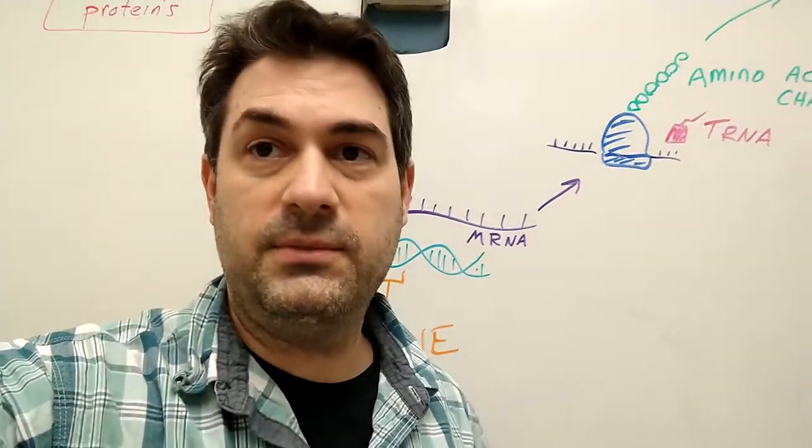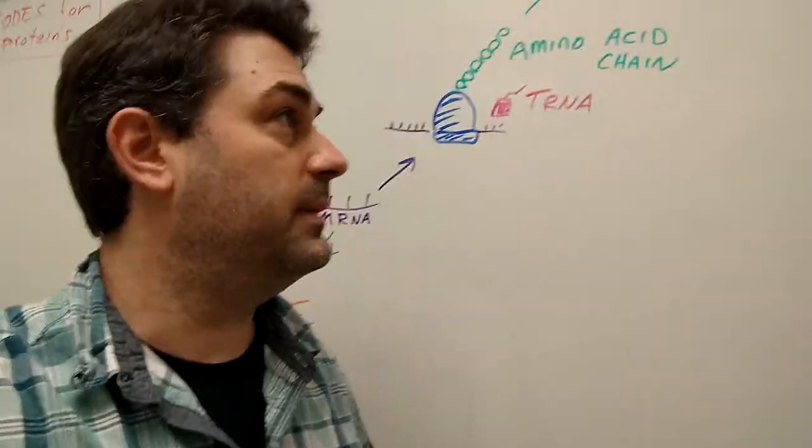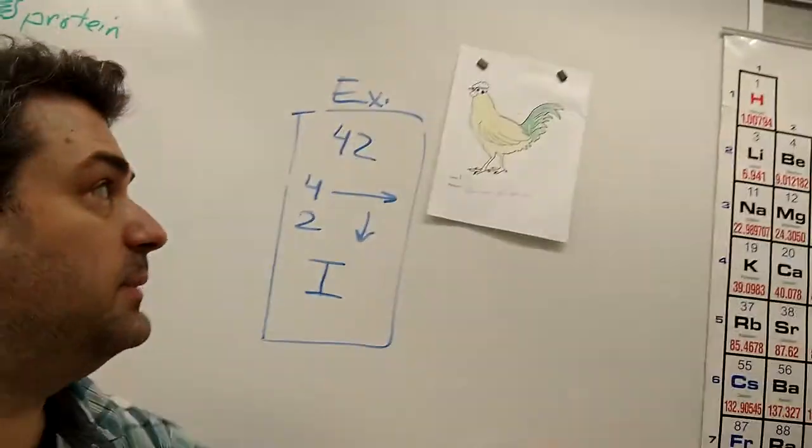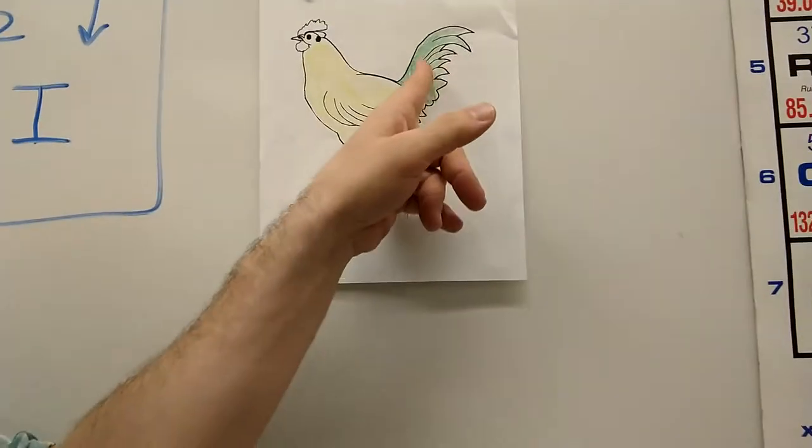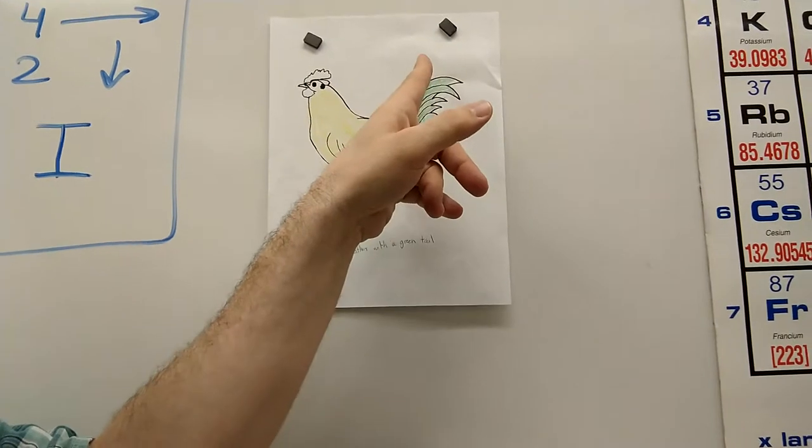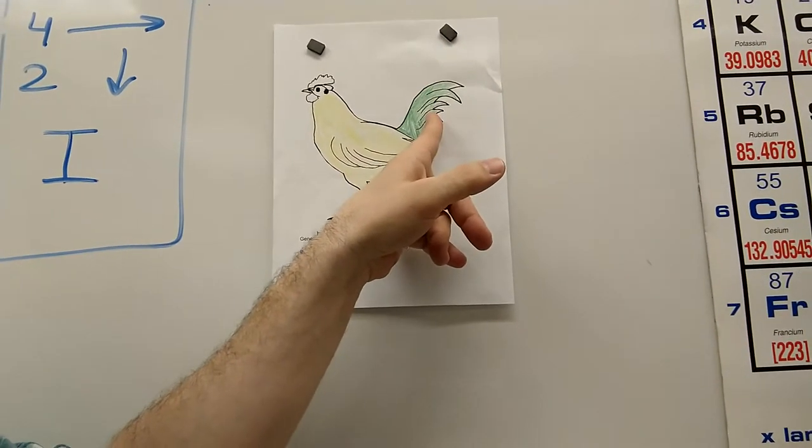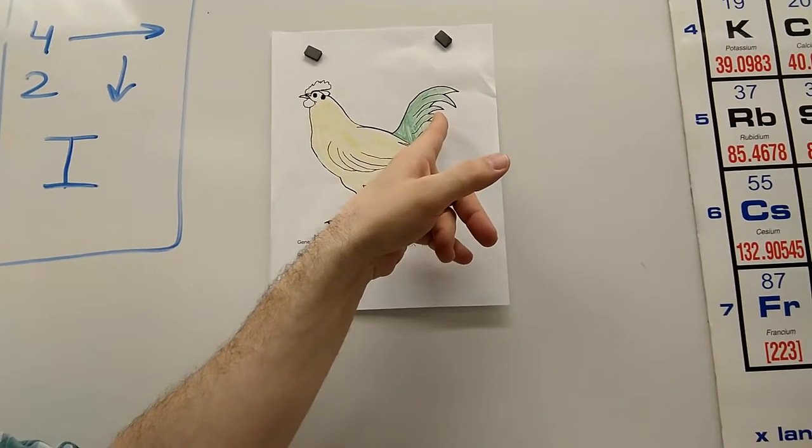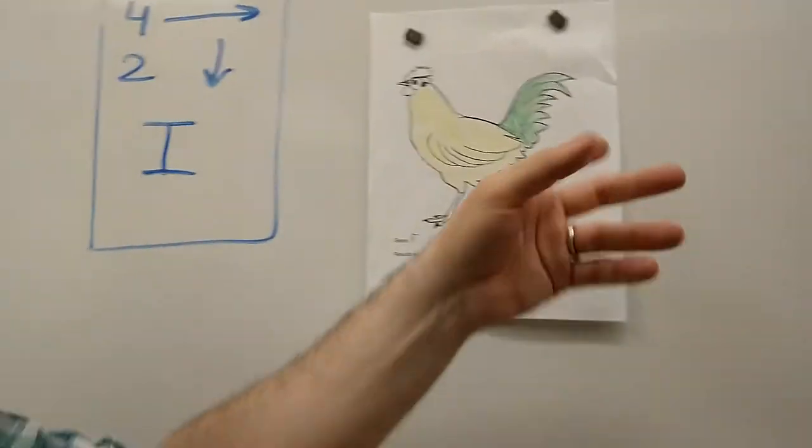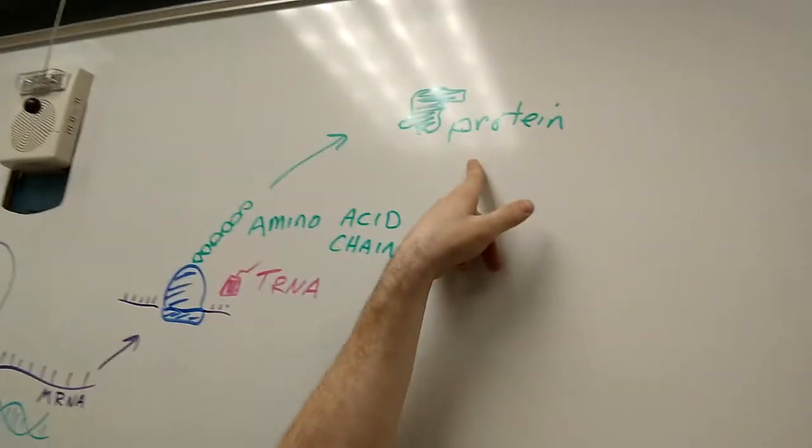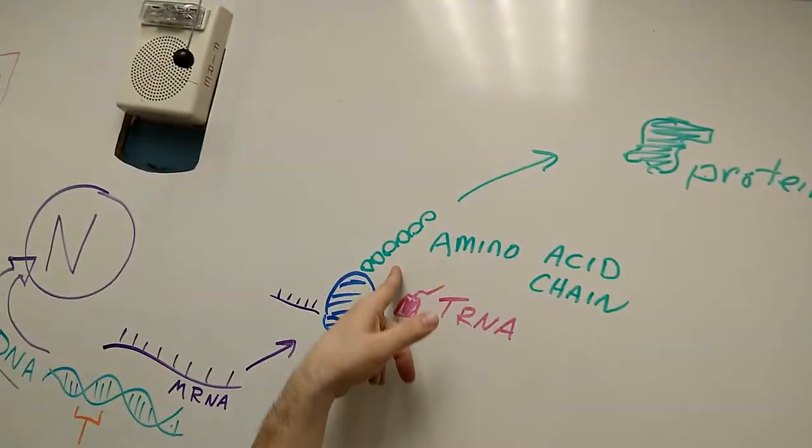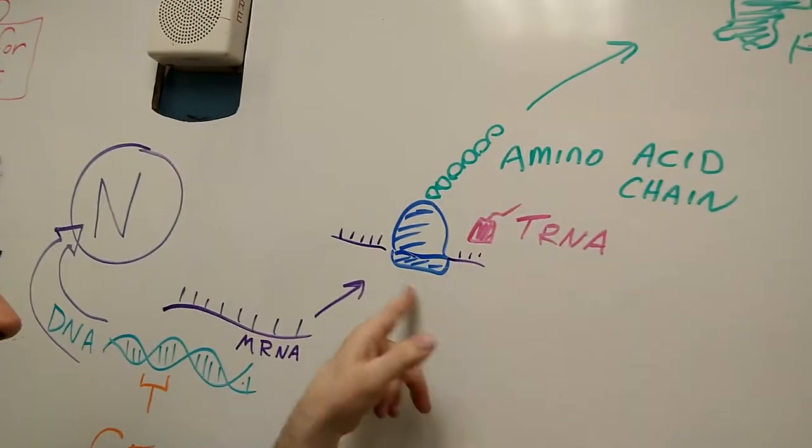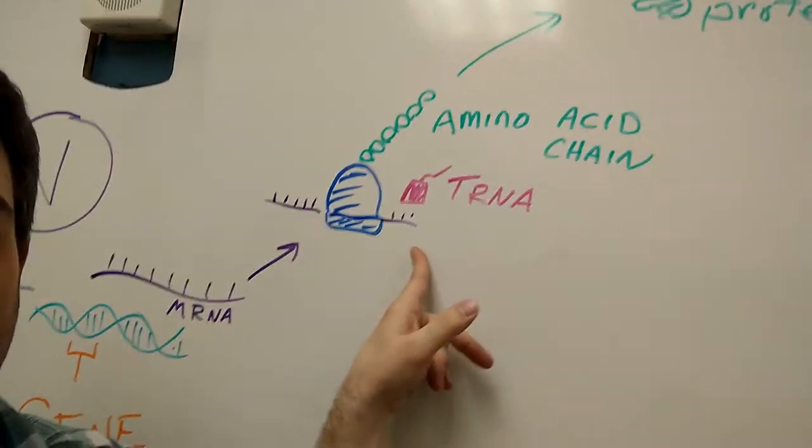The ribosome reads the information on this messenger RNA and translates it with transfer RNA into an amino acid chain that gets folded into a protein. The protein then becomes all the parts of whatever we're talking about. In this particular case, we have a chicken. This chicken has green feathers on the tail. The green in its tail is because of a protein, and the protein is what makes it green.